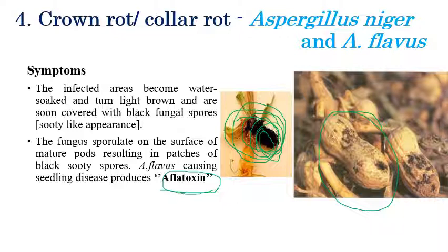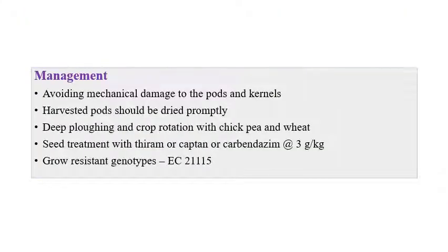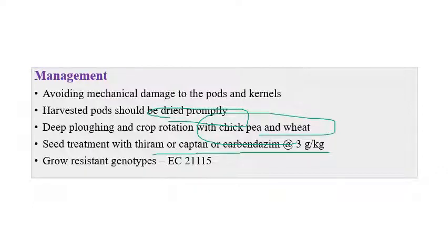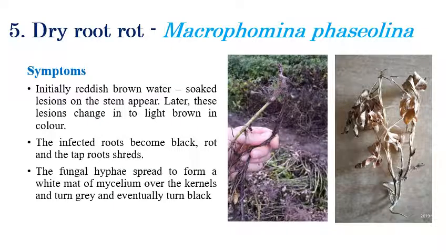For management of crown rot, avoid mechanical damage to pods and kernels. Harvested grains should be dried properly to escape Aspergillus infection. Deep plowing and crop rotation with chickpea and wheat also give some relief. Seed treatment with thiram, captan, or carbendazim at 3 grams per kilogram is recommended. Resistant genotype EC 2115 is available for Aspergillus.